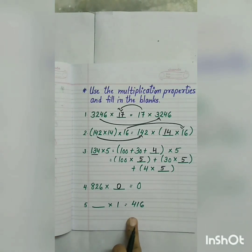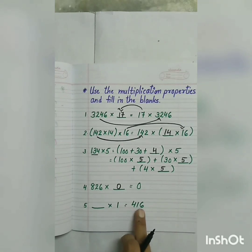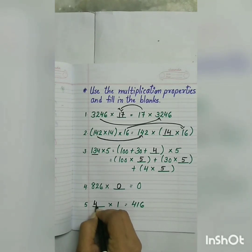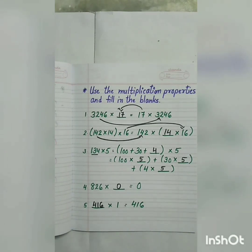Fifth: blank multiplied by 1 is equal to 416. Our product is 416. If we multiply any number by 1, the product will be the number itself, so the missing number is 416. Which property is this? Identity property. Correct.